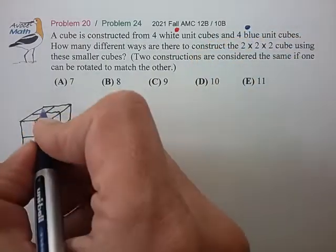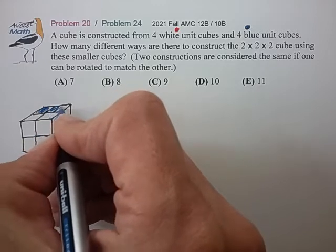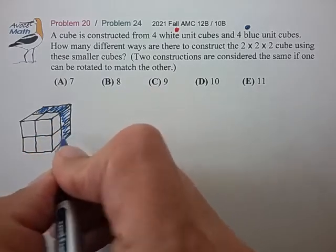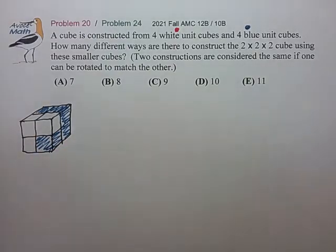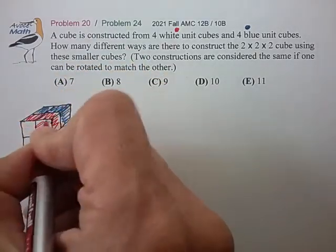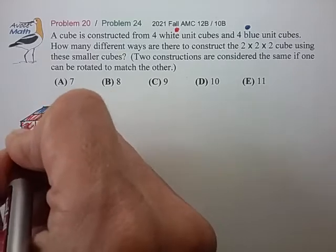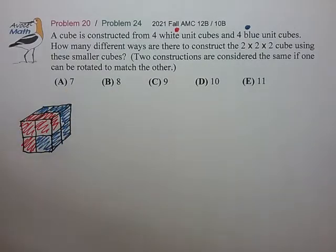So imagine I make these four cubes here blue and these three cubes here red and the one hidden cube in the back is red. So that's going to be very difficult to draw.